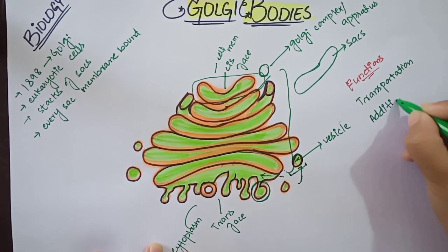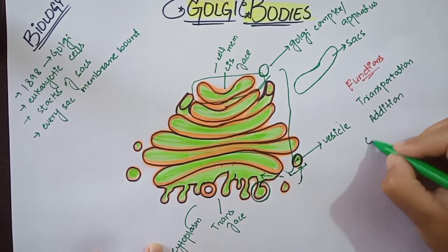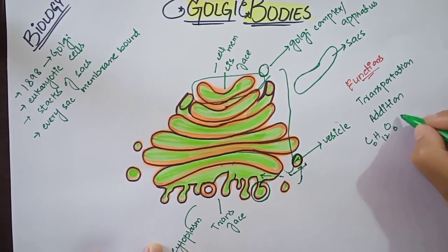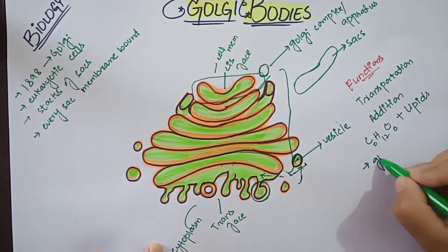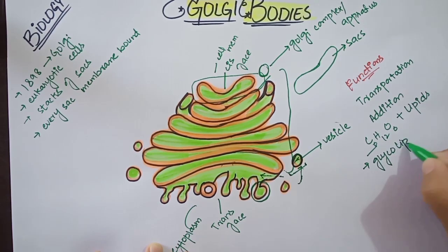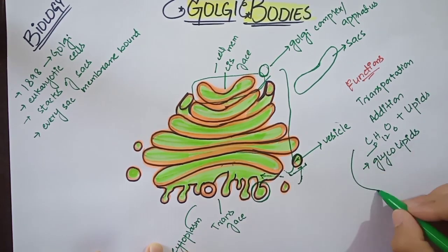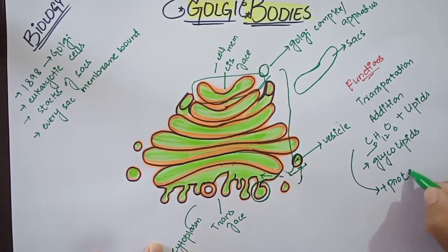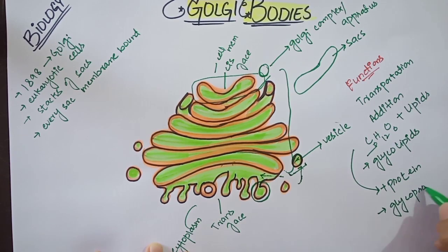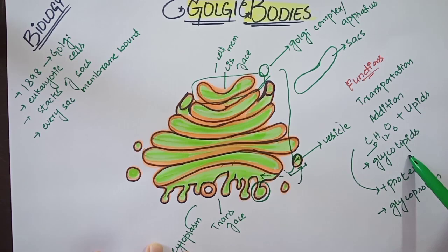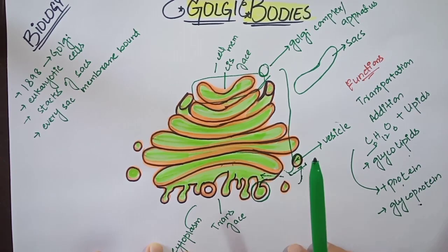Another function of Golgi bodies is the addition of molecules. They add carbohydrates (C6H12O6) to lipids to form glycolipids. Glycol is a word used for carbohydrates. When carbohydrates are added to proteins, they form glycoproteins. So in summary: addition of carbohydrates to lipids forms glycolipids, and addition of carbohydrates to proteins forms glycoproteins.